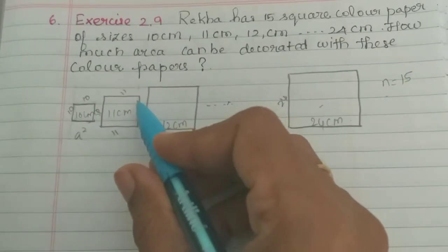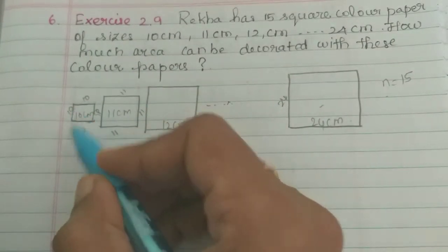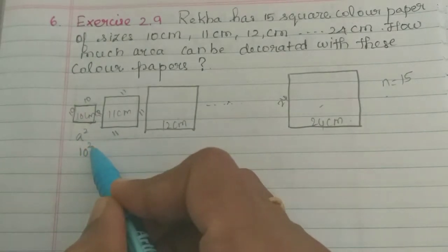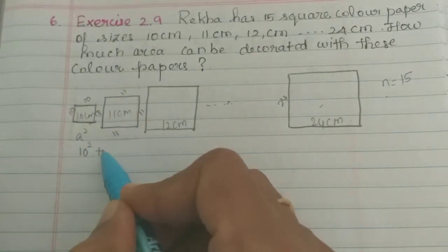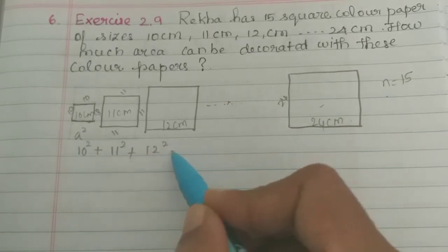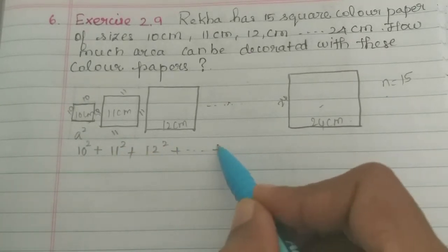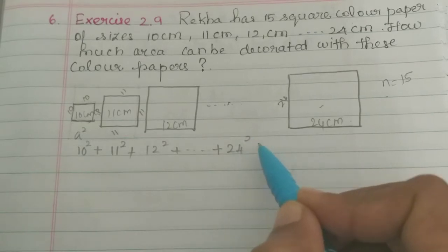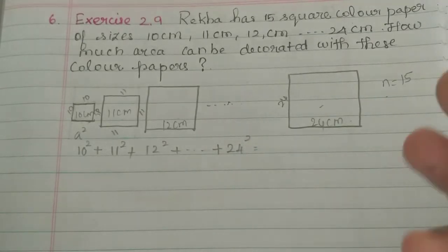So side into side is 10 into 10, which is 10 square. Then add this area, then 11 square plus 12 square, plus etc. up to 24 square.